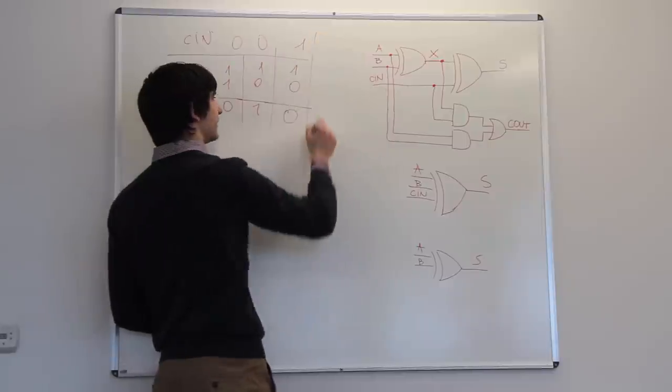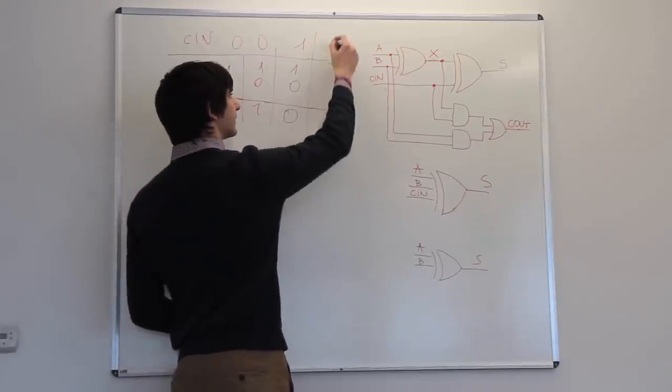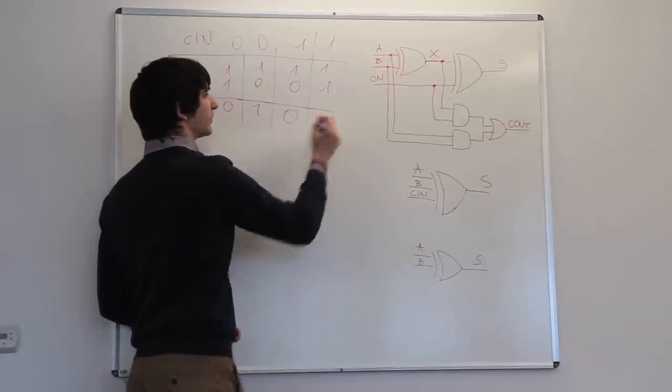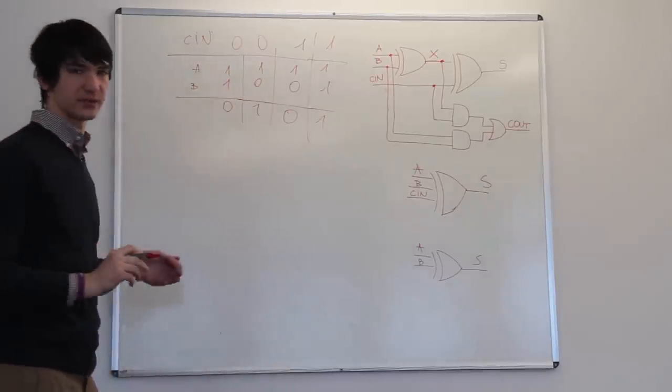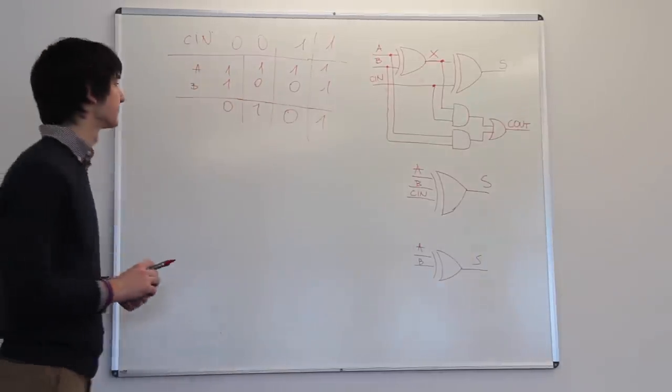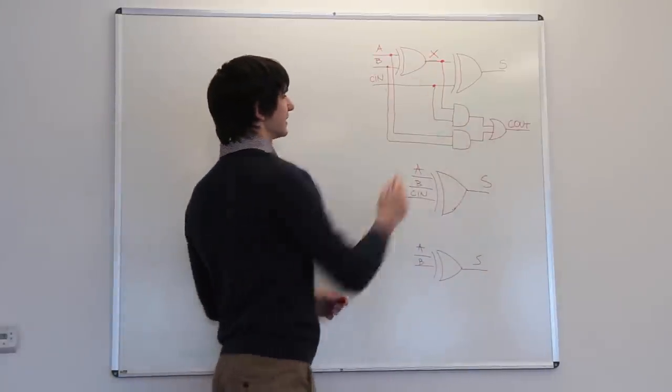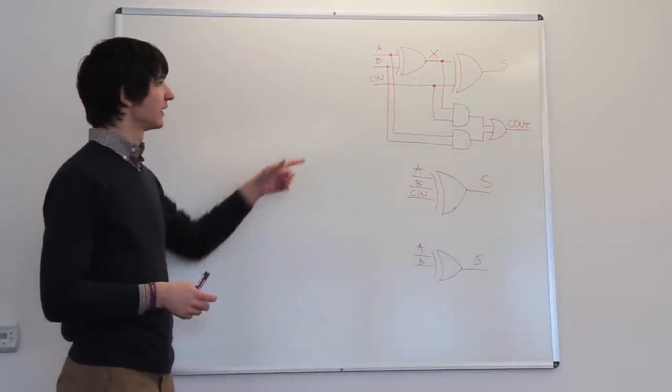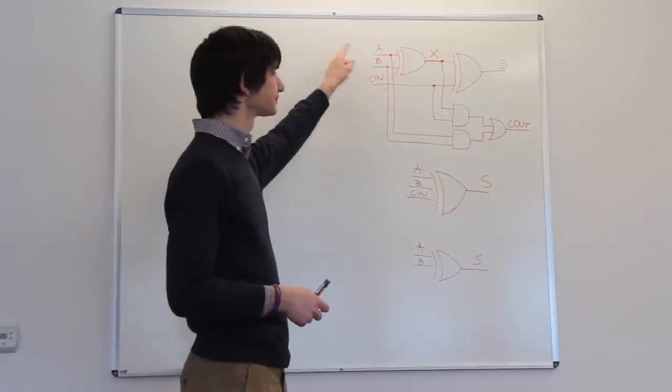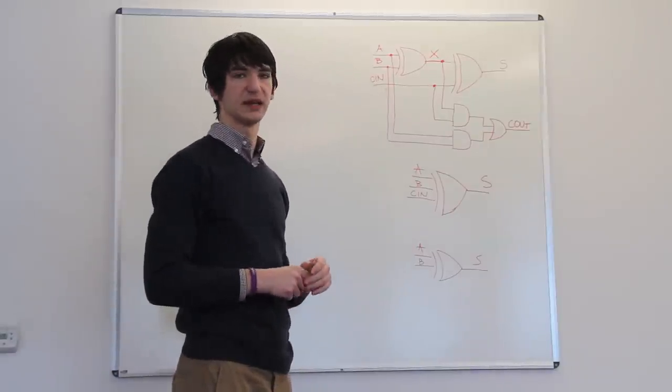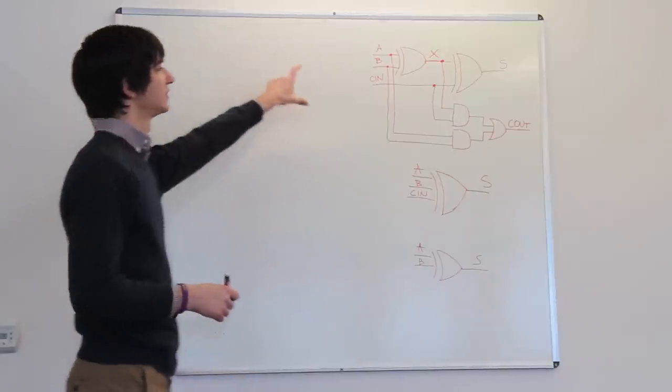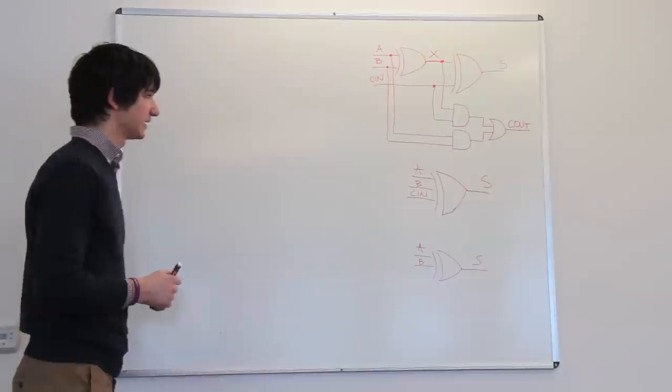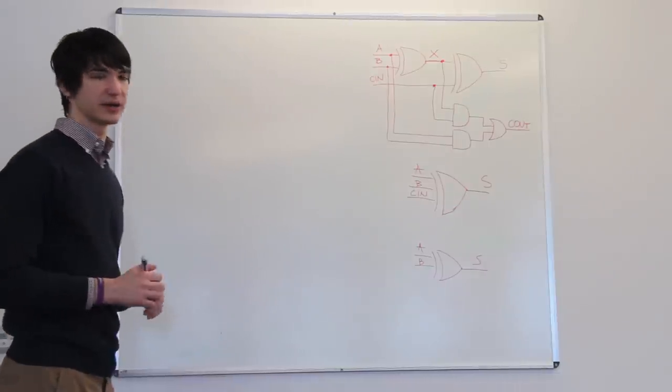But if you have a carry of one, an a one, and b one, your output would be one, because you would have three ones, which is an odd number of ones. The rest of the circuit here is detecting whether there are two out of three ones. So if you have three possible inputs, a, b, and c, and it detects if two of them are ones,